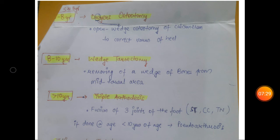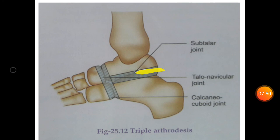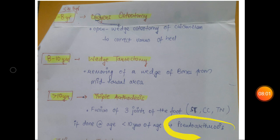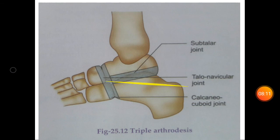In between eight to ten years of age, wedge tarsectomy is performed: removing a wedge of bones from the mid-tarsal area. In more than 10 years of age, go for triple arthrodesis: fusion of three joints—subtalar joint, talonavicular joint, and calcaneo-cuboid joint. If done less than 10 years of age, it will result in pseudoarthrosis.